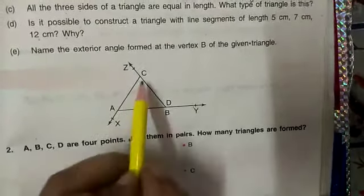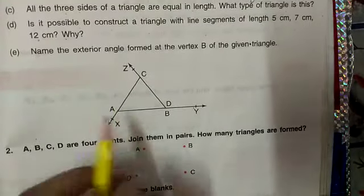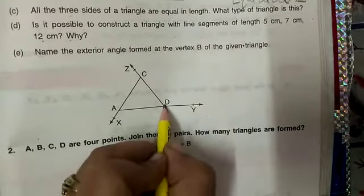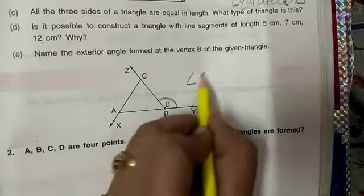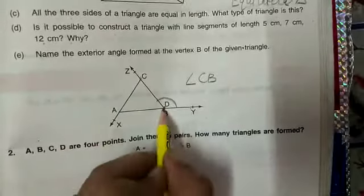Now, E part: name the exterior angle formed at vertex B of the given triangle. This is the exterior angle. We will name it as angle CBY.